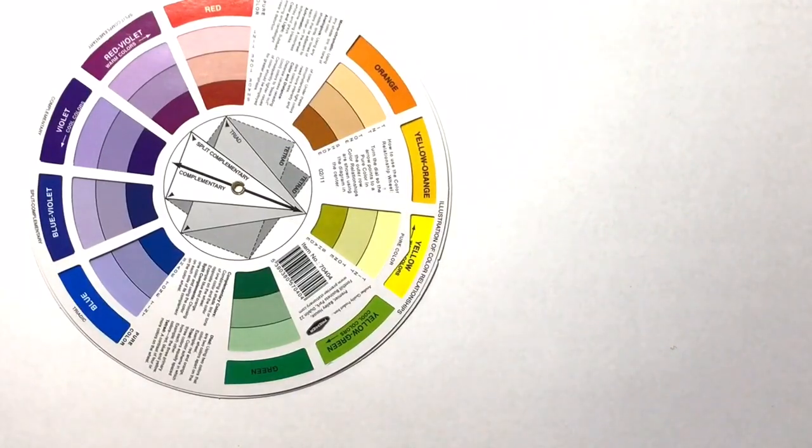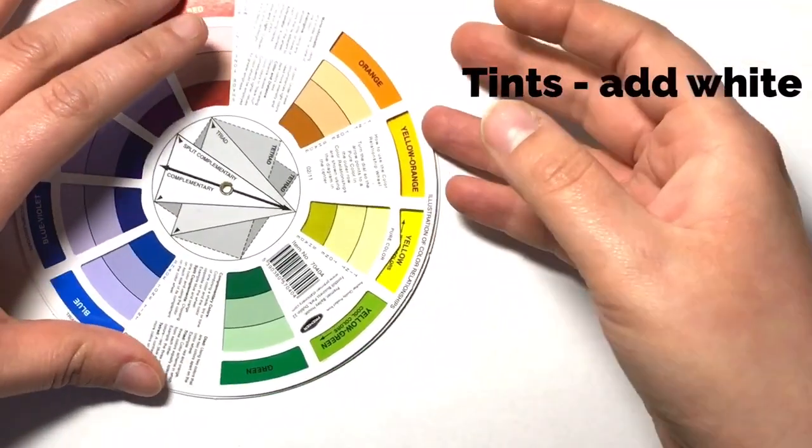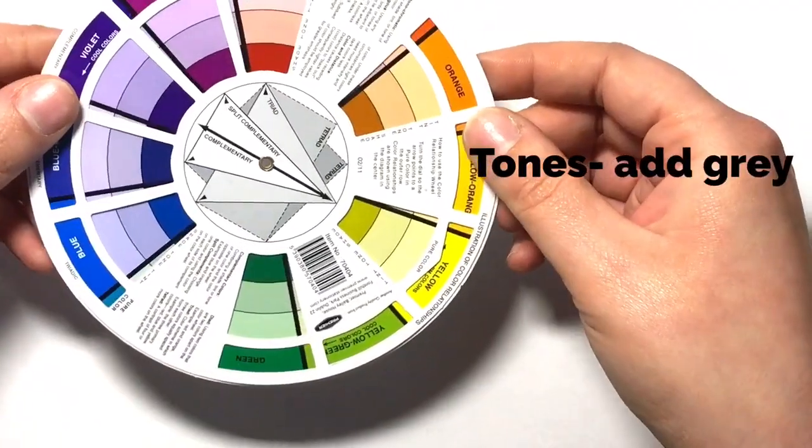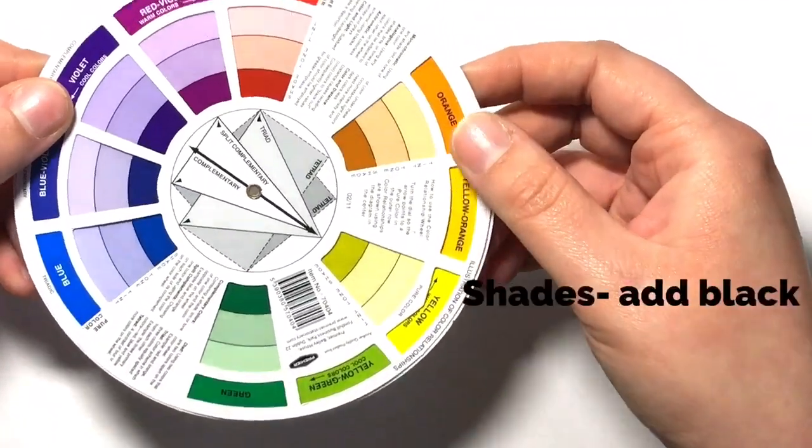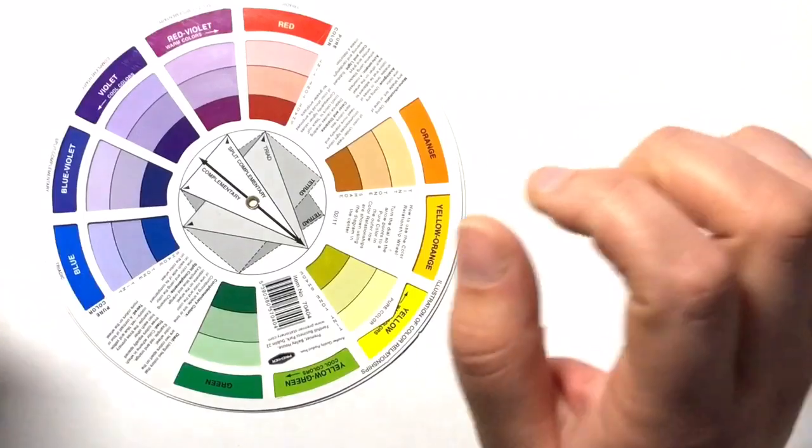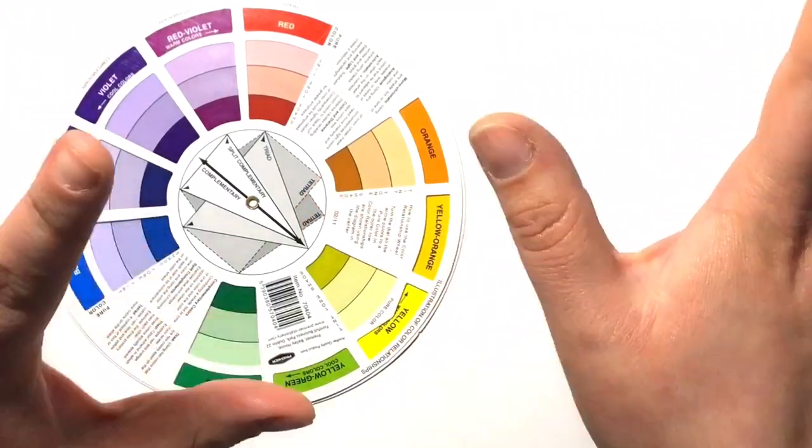So just to clarify, tints are when you add white to a color, tones are when you add gray to a color, and shade is when you add black to a color.